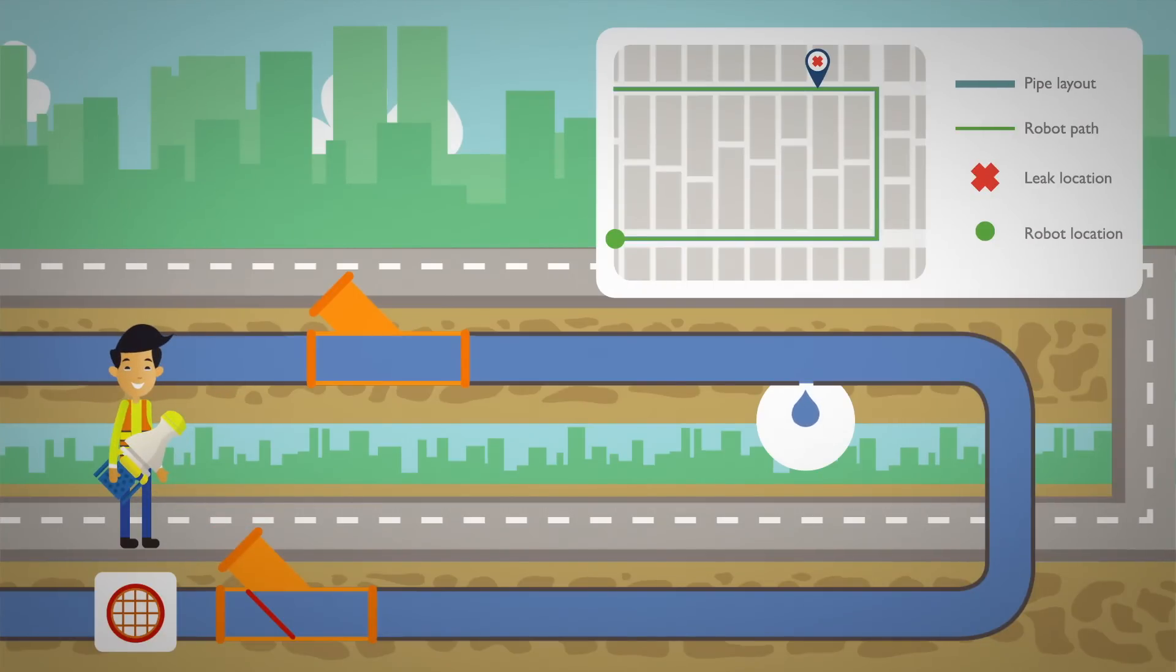So this is the MIT leak detection robot, the solution for mapping out water pipe leaks in your city.